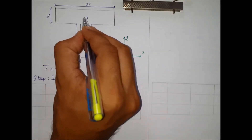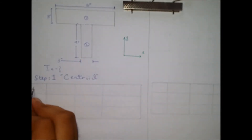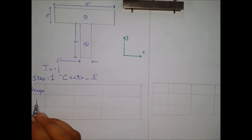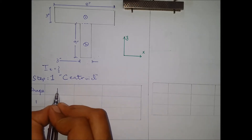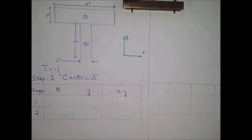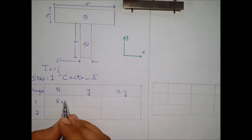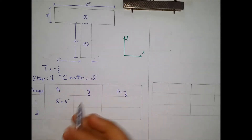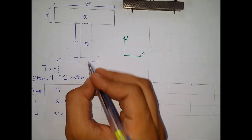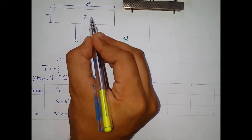Let's call this shape number 1 and this as shape number 2. For the centroid calculation, the area for shape 1 is 8 by 3 inches. The area for shape 2 is 3 by 9 inches. Y is the distance from the reference point we are considering. For shape number 1, 9 plus 3 divided by 2 will be the centroid of this shape.